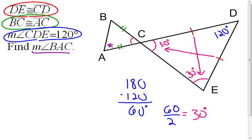I look over here at angle BCA is vertical to angle DCE. Therefore, this one's going to have to be a 30 degree angle.